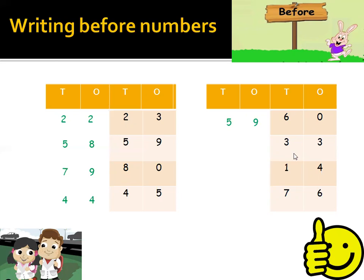Next is 33. Before 33, which number will be there? Yes, it's 32. Next is 14. Before 14, here comes 13. Now 76. Before 76, which number will be there? Yes, 75. Good job.